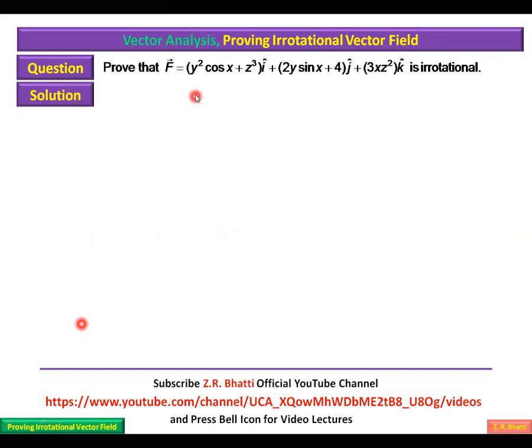Prove that F = (y² cos x + xz³) i + (2y sin x + 4) j + (3xz²) k is irrotational.